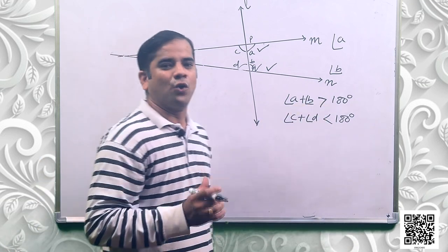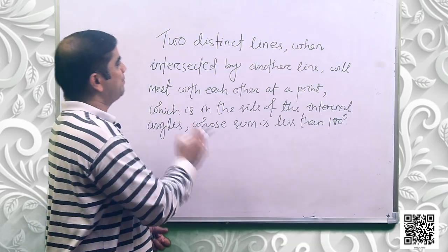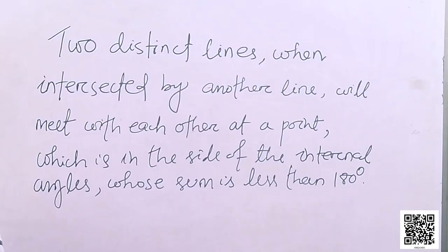So to summarize: two distinct lines, when intersected by another line, will meet each other at a point on the side of the internal angles whose sum is less than 180 degrees.